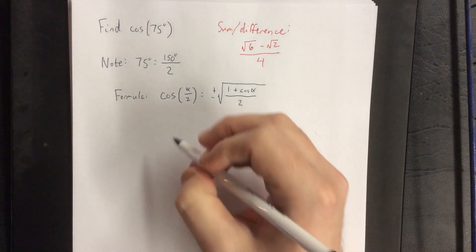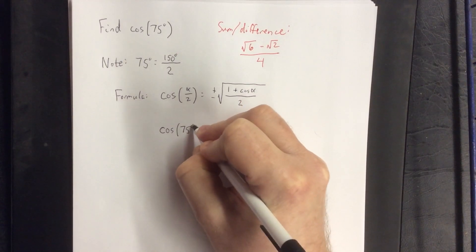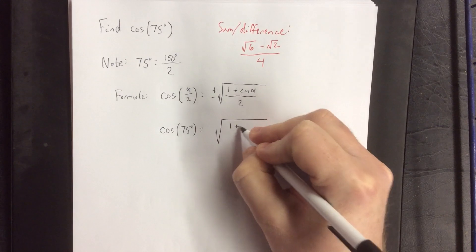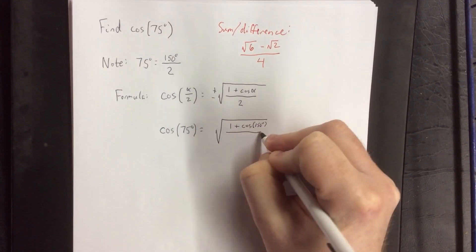So if I'm interested in finding the cosine of 75 degrees, that would be equal to the square root of 1 plus the cosine of double that angle all over 2.